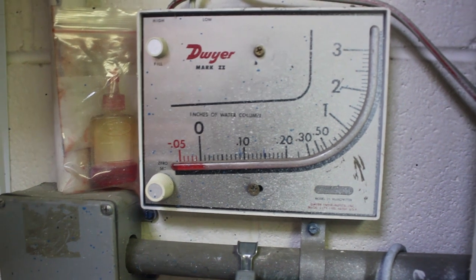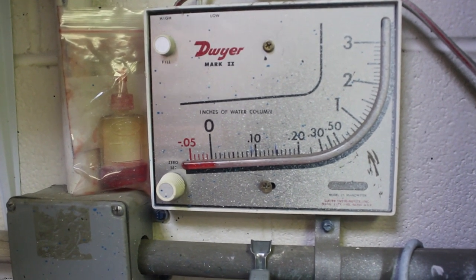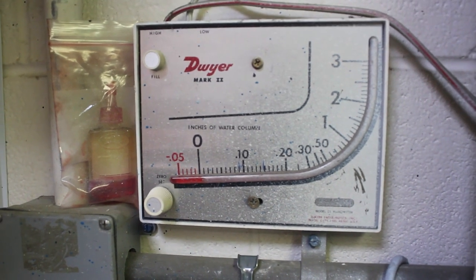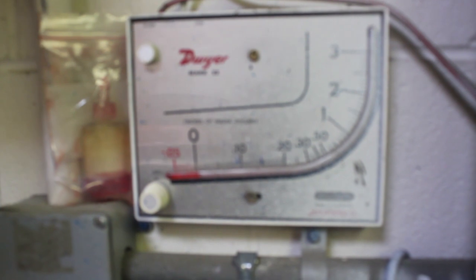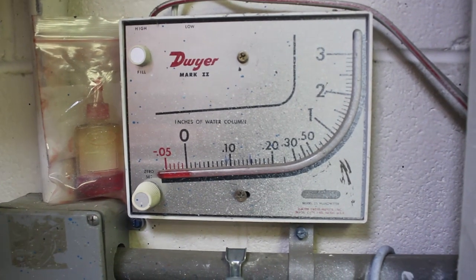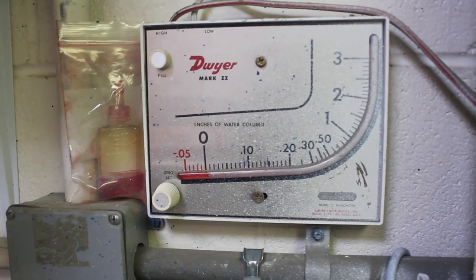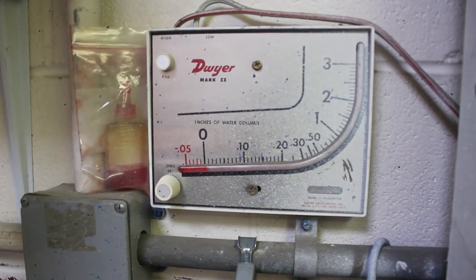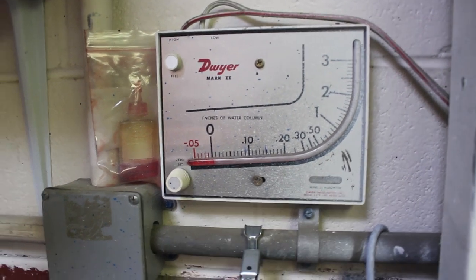Today we are going to be covering how to set up and calibrate a spray booth manometer. A spray booth manometer is a visual gauge for when you need to change your paint booth filters and is a national safety requirement. Failure to have one can result in citations and fines. So it's important to know how to use them and how to keep them calibrated.